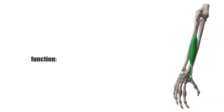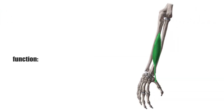The main function of the deep extensors is to move the joints of the hand and fingers. The abductor pollicis longus pulls the thumb forward at the saddle joint, resulting in abduction.